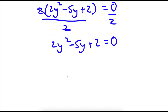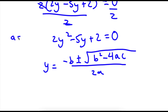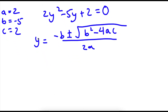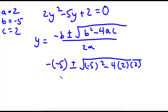To solve this, I'm going to use the quadratic formula: negative b plus or minus the square root of b squared minus 4ac, all divided by 2a. In this case, a equals 2, b equals negative 5, and c equals 2. Substituting into the formula: negative negative 5, plus or minus the square root of negative 5 squared minus 4 times 2 times 2, divided by 2 times 2.